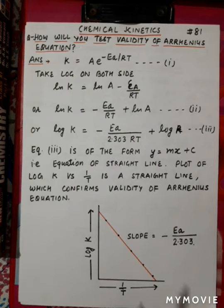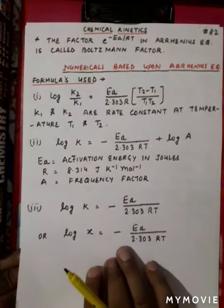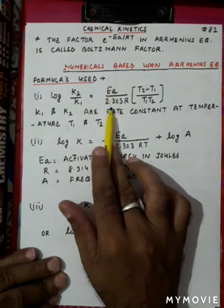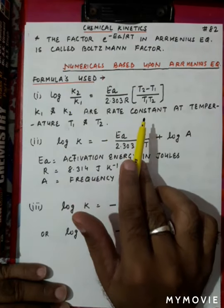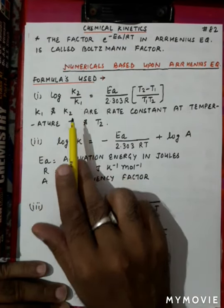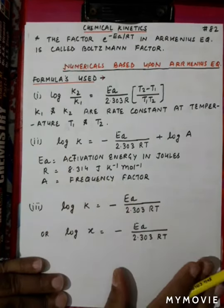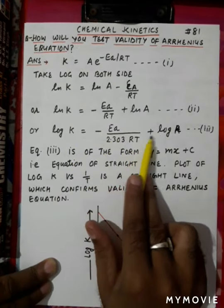This is a small concept that may also be used in numericals, so I covered it here. Now let's see which formulas we need to use in the numericals. The first formula, which you studied in the previous video, is: log(k2/k1) = Ea/(2.303R) × (T2 − T1)/(T1 × T2). Here k1 is the rate constant at temperature T1, and k2 is the rate constant at temperature T2.